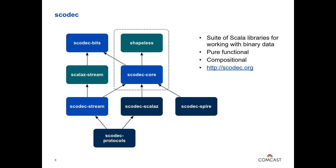S-Codec bits is super stable. The idea is that it's a library safe for other libraries to depend on. You don't want dependency management nightmares where S-Codec core is using S-Codec bits version one and Scalaz Stream is using S-Codec bits version two, causing weird unresolvable dependency issues. So S-Codec bits does not change very often at all. Today's talk is about S-Codec core and Shapeless.